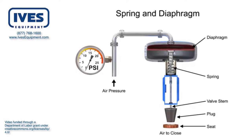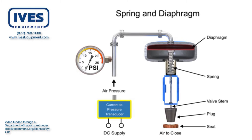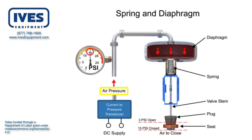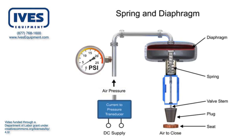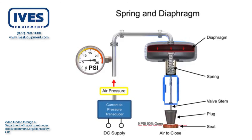To vary the position of the restrictor and flow through the valve, a current to pressure transducer can be used to provide a 3 to 15 psi signal to the diaphragm. At 3 psi the valve is maintained open and at 15 psi the valve is maintained closed. Pressures between the 3 to 15 psi range proportionally change the flow of the valve. For example, a pressure of 9 psi applied to the diaphragm moves the spring and valve stem to 50% of operating range.